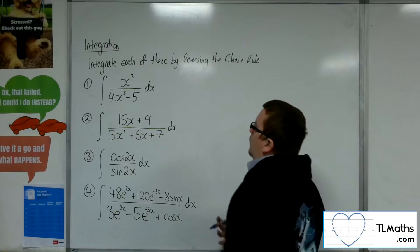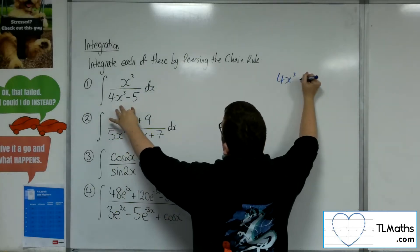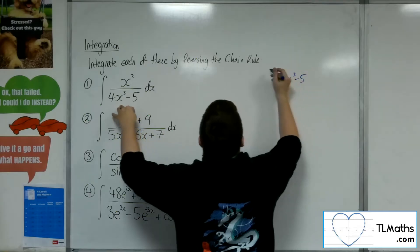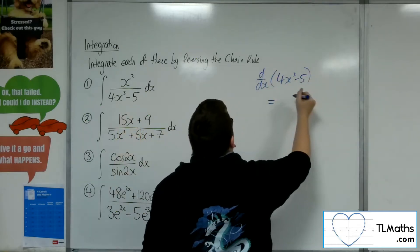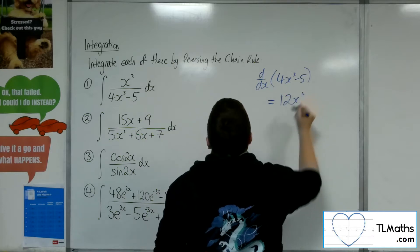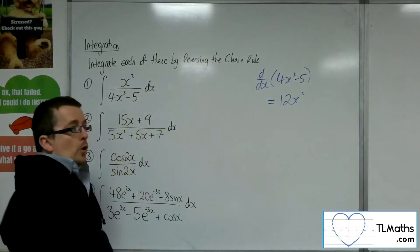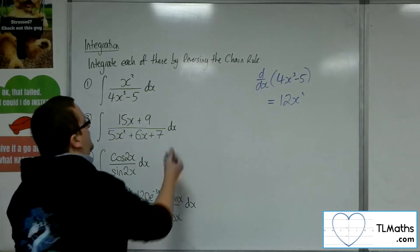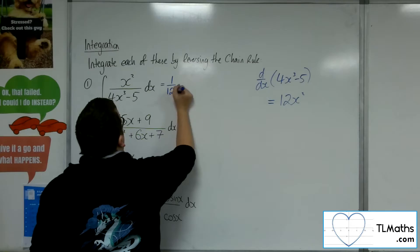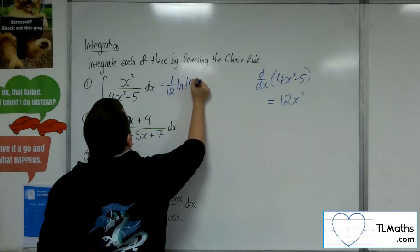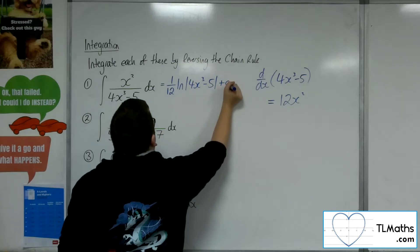In each case we're going to look at the denominator. So in number 1 we've got 4x cubed minus 5, and if I differentiate that, I get 12x squared. Now in the numerator here I've got x squared, so I've got 1 twelfth of what I need.